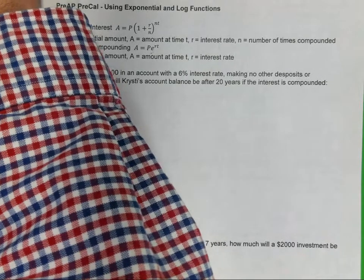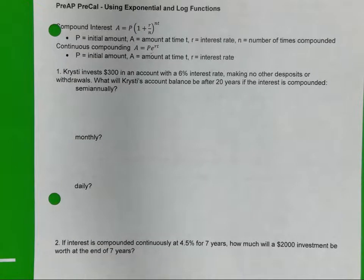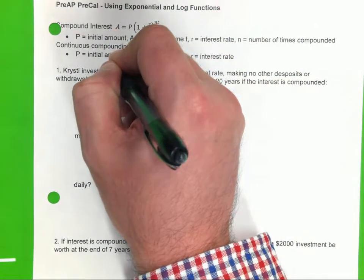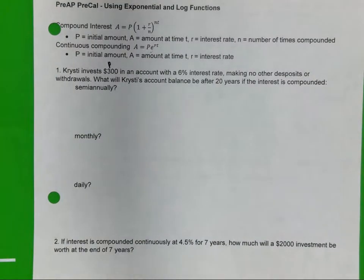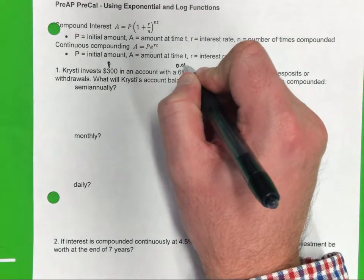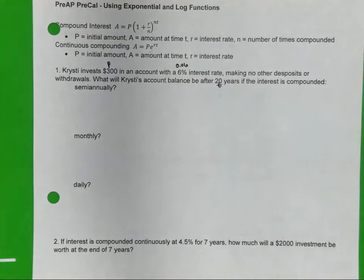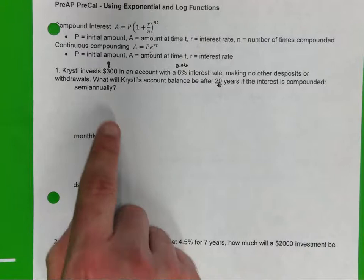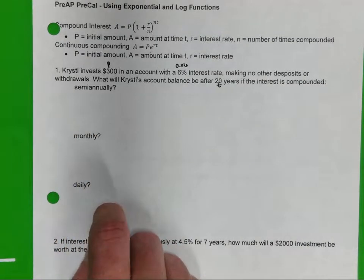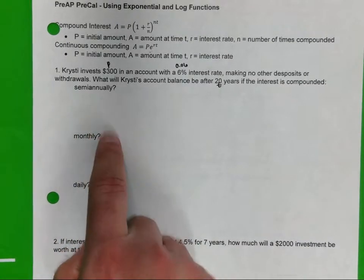All right, so it says Christie invests $300 in an account. What is $300? That's your principal, that's your starting amount. With a 6% interest rate, so I'm going to label this, this is P. 6%, how would I change that? 0.06. Making no other deposits or withdrawals. What will Christie's account balance be after 20, that's the time, if the interest is compounded? I want you to find it semi-annually, monthly. We're going to do semi-annually and monthly, okay?